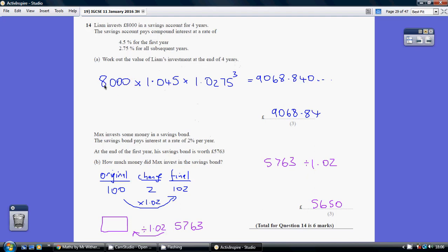We've got the £8,000 initial investment. The multiplier coming from interest of 4.5% in the first year is 1.045, and the multiplier coming from 2.75% is 1.0275. We've got three years worth of this because it's the subsequent years.